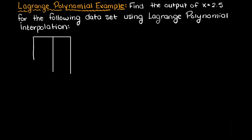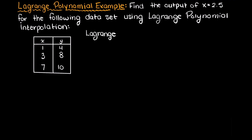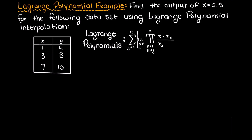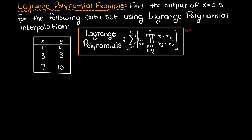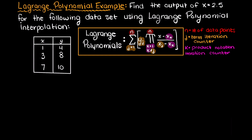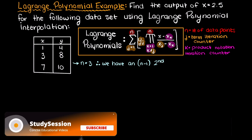We are asked to estimate the output of the following dataset using Lagrange polynomials. If you have seen our previous video on Lagrange polynomials, we talked about the degree of them, and since we have three data points presented, we will have three terms in our second order Lagrange polynomial.